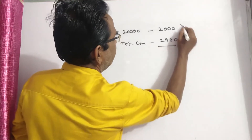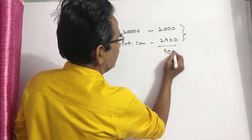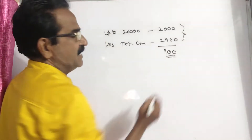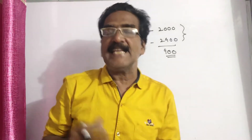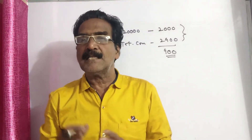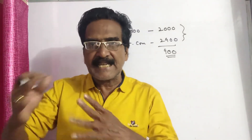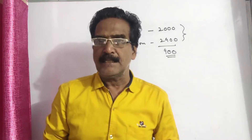So the difference is 900. The difference of 900 is the commission on the sales exceeding 20,000.